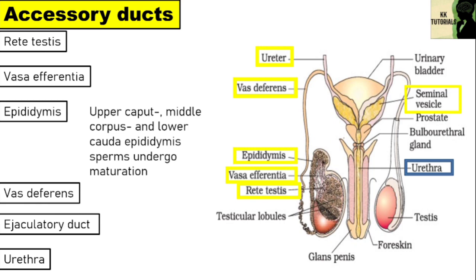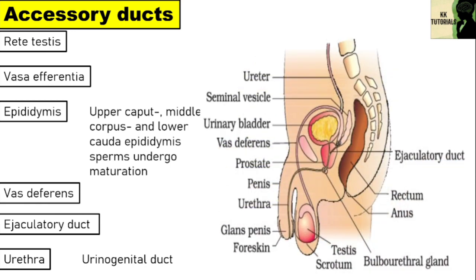The urethra provides a common passage for urine and semen and hence is also called the urinogenital duct. In males, the urethra is long and extends through the penis. It opens to the outside by an opening called the urethral meatus or urethral orifice.